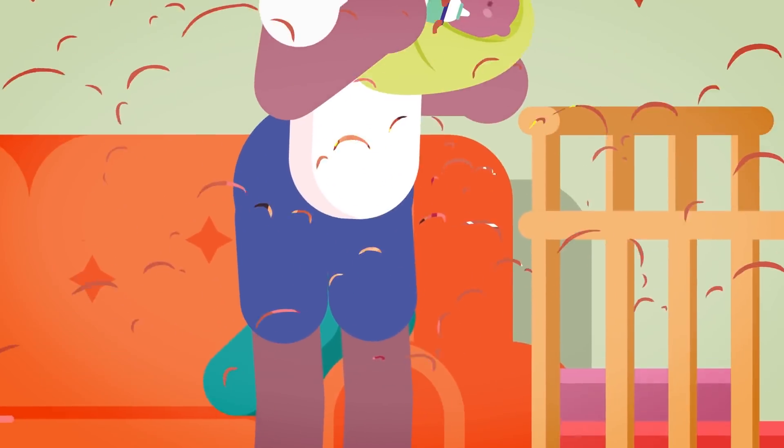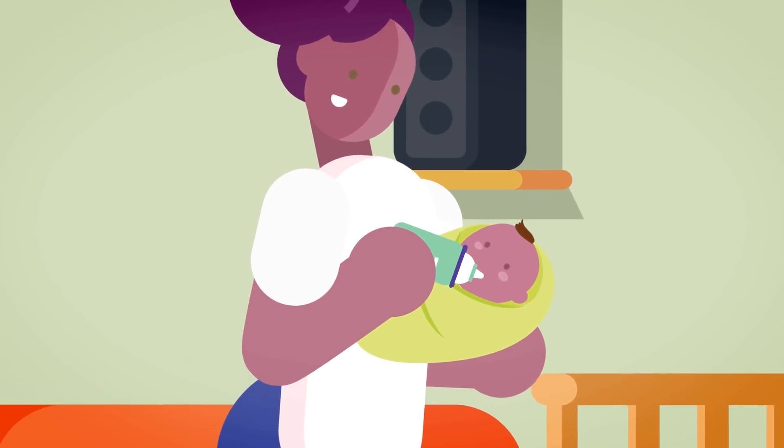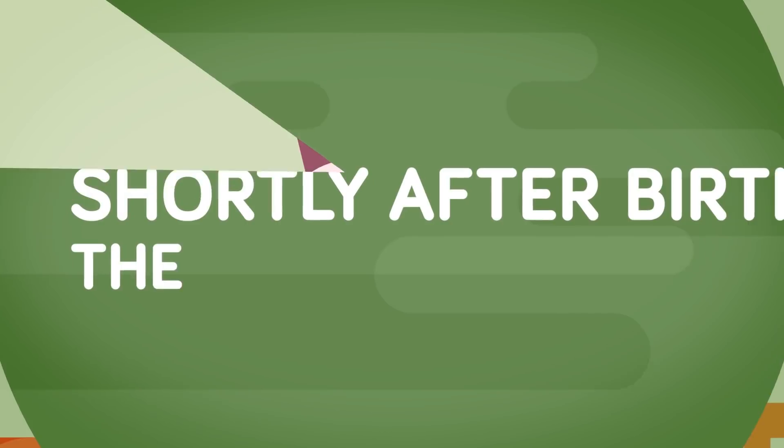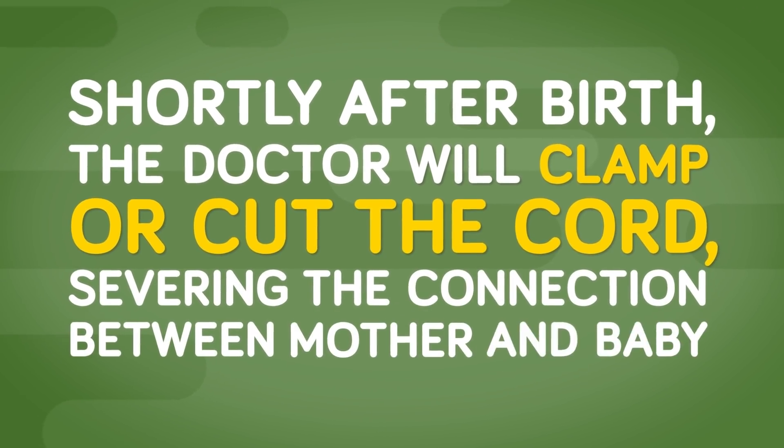Once the baby is born, though, it can finally drink milk and breathe on its own, and the umbilical cord becomes useless. That's why shortly after birth the doctor will clamp or cut the cord, severing the connection between mother and baby.